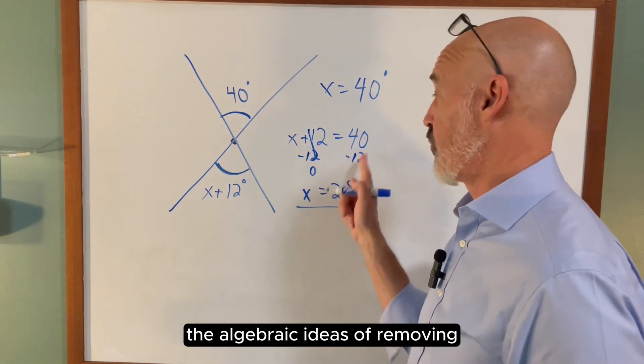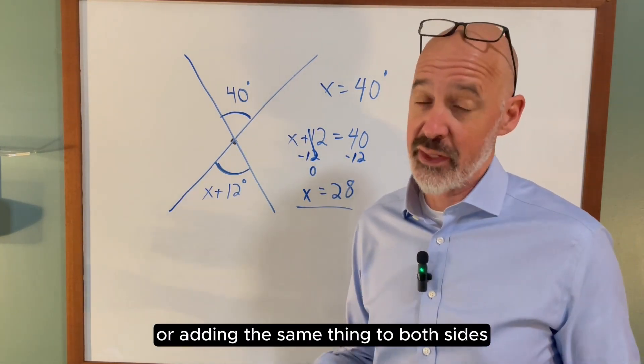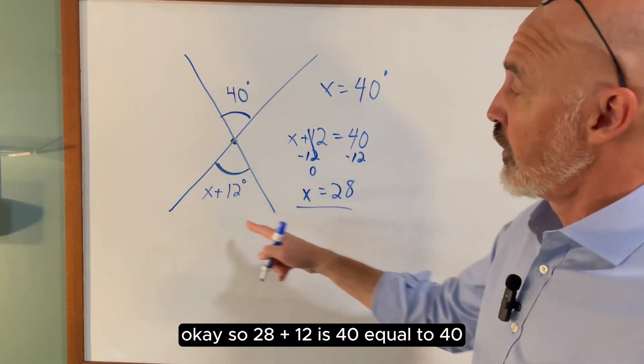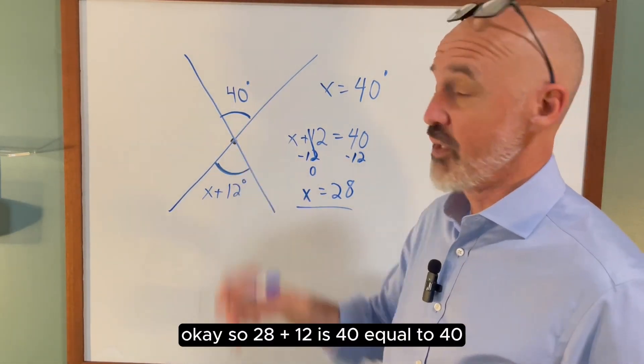Of course I could do this in my head, but it is helpful to practice the algebraic ideas of removing or adding the same thing to both sides. 28 plus 12 is 40, equal to 40.